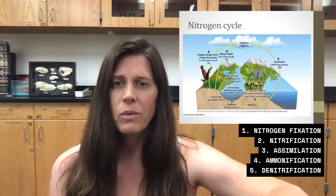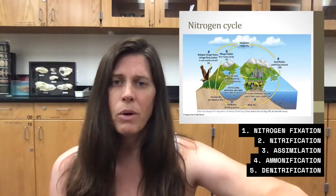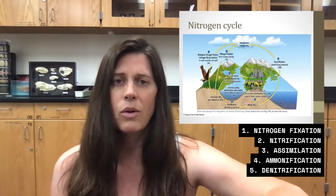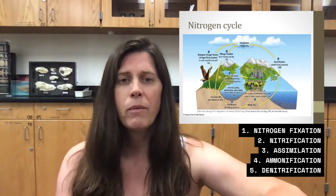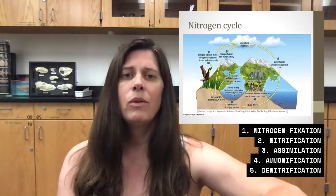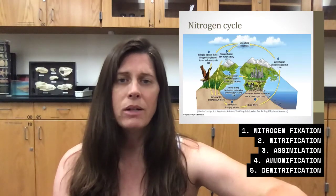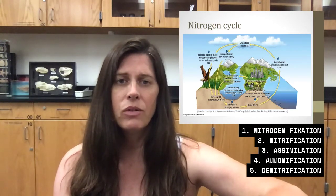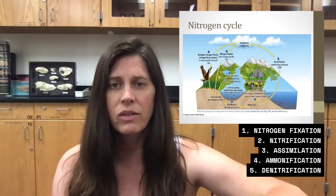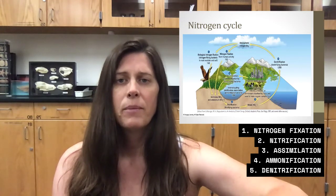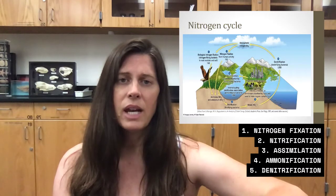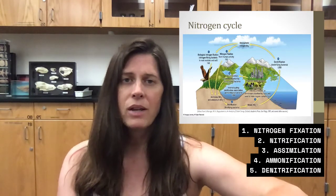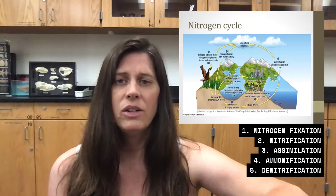Then some of that becomes waste. So in the fourth step, ammonification, we convert the organic nitrogen, once it gets into the alive body we call it organic, and we convert it back into ammonia and ammonia ions through urea and uric acid. And denitrification is taking the nitrate and reducing it back to the nitrogen gas, the N2.